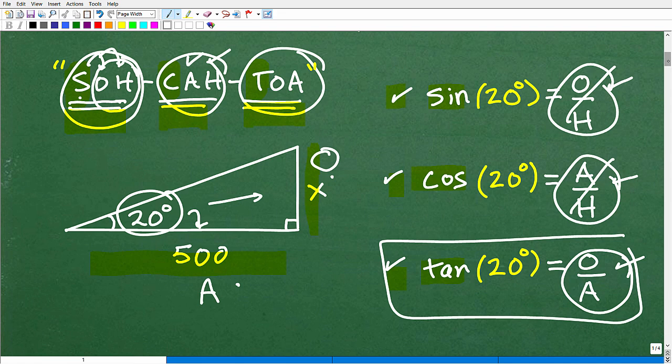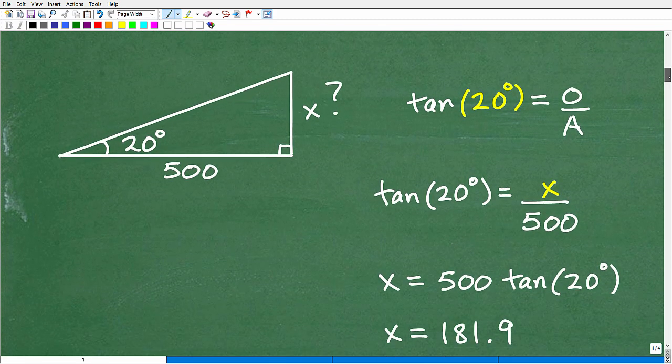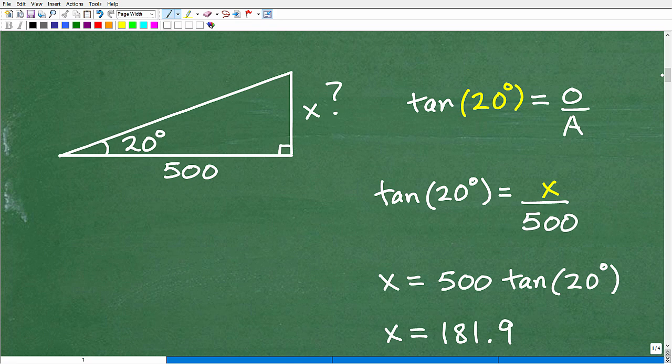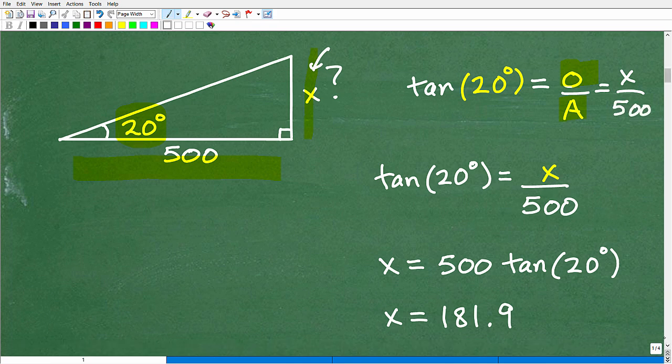So now that you know this, that the tangent is the opposite over the adjacent, we're ready to rock and roll and get our solution here. So I know that the tangent of this guy is the opposite over the adjacent, which is X over 500. Remember, this is the opposite, which is X. I don't know that, but I do know my adjacent is 500. So this is how you solve a right triangle problem using trigonometry. So we're going to say the tangent of 20 degrees is equal to X over 500. We already defined why that's the case, because that's the opposite over the adjacent.